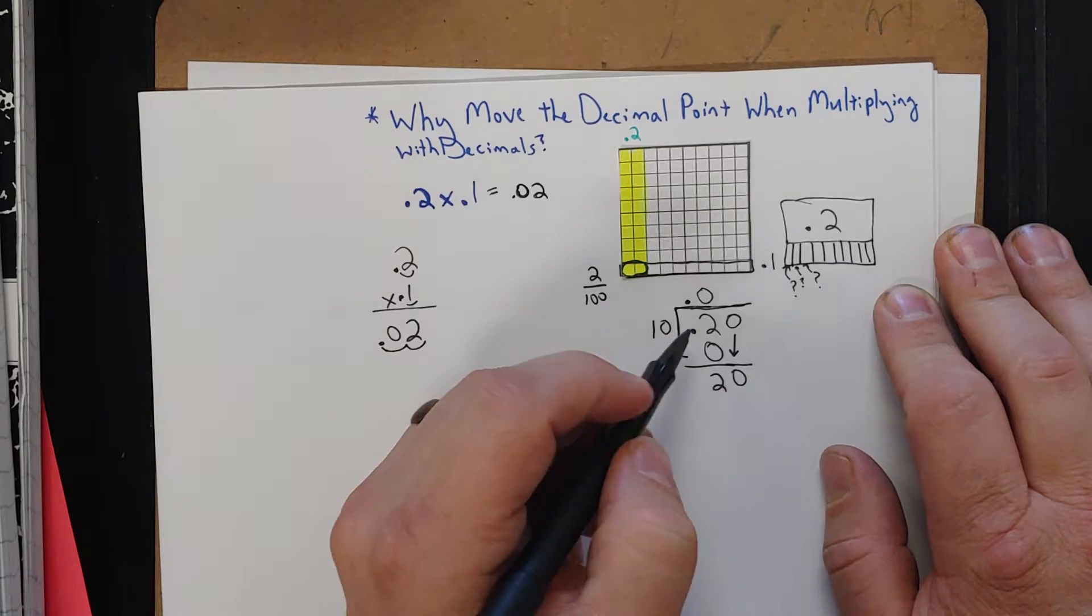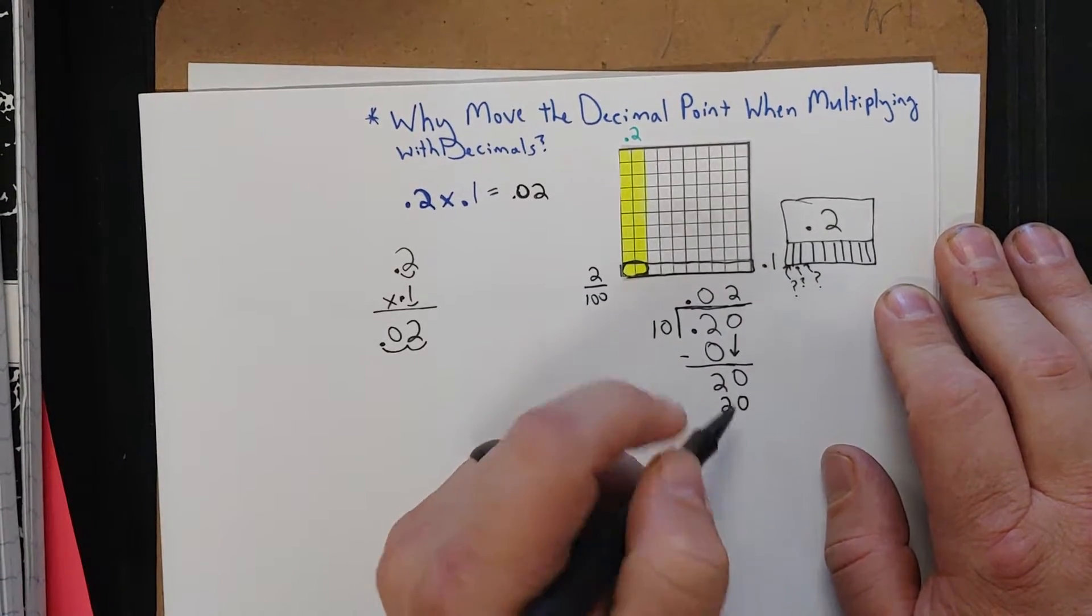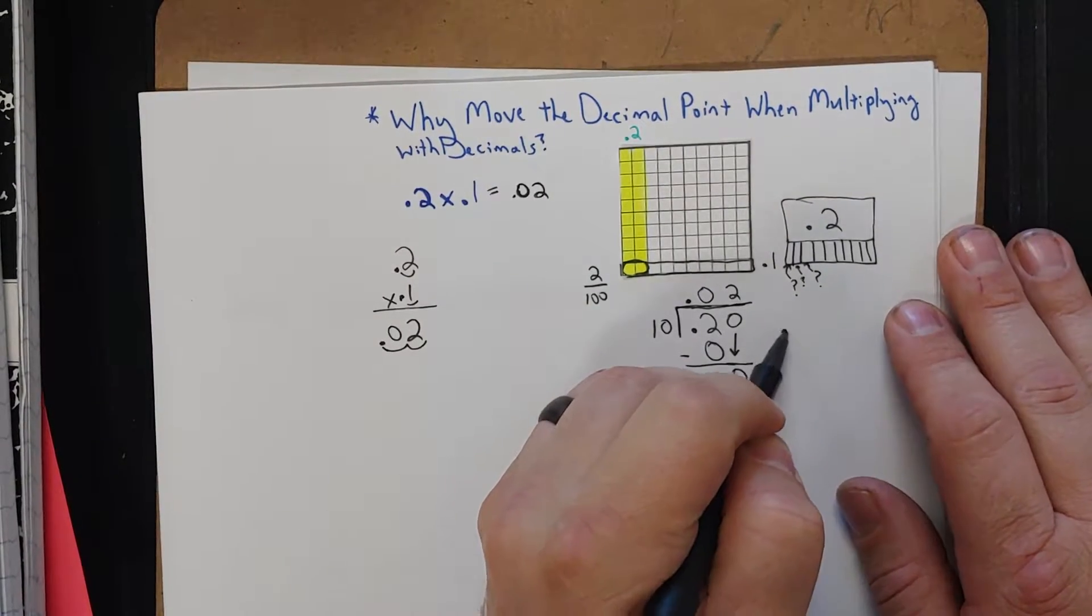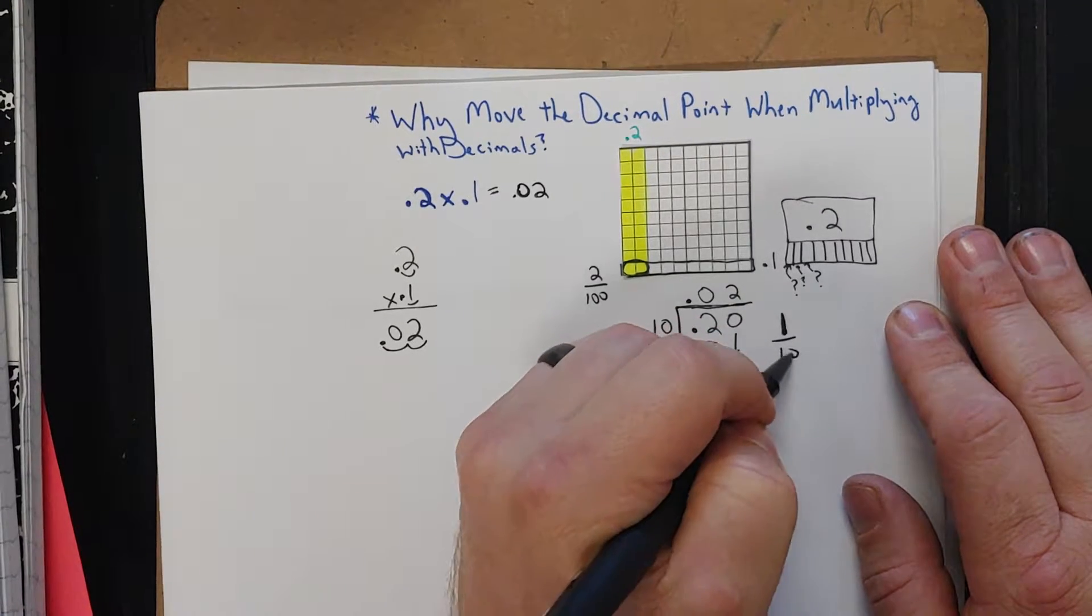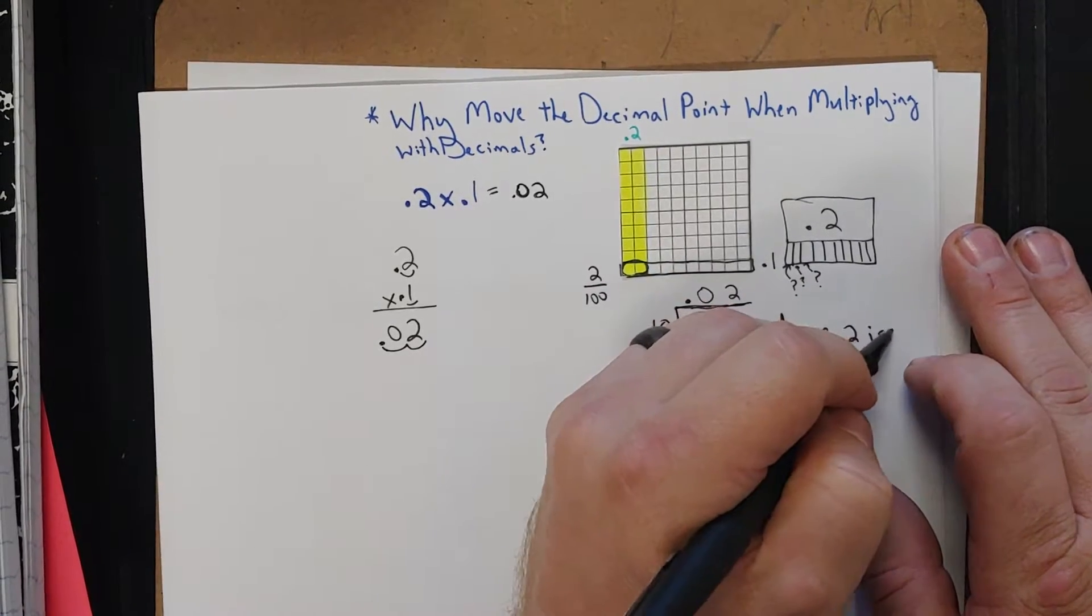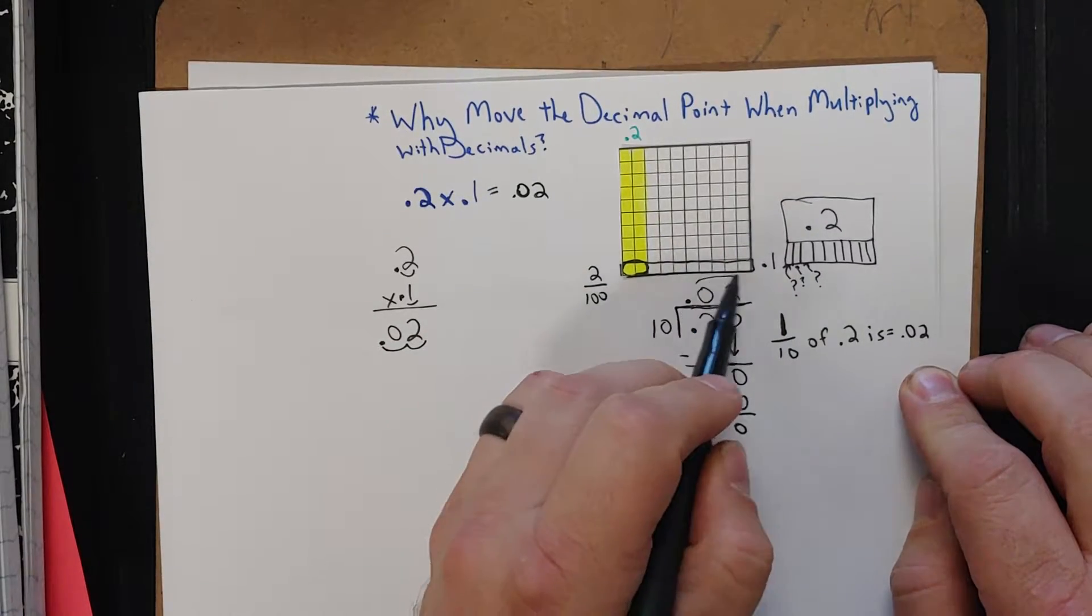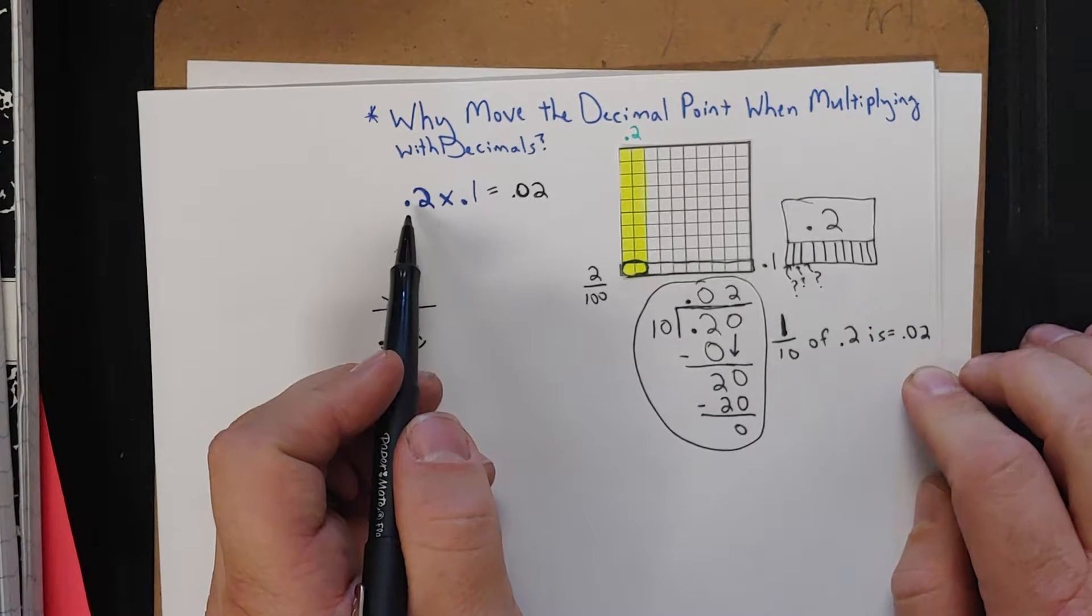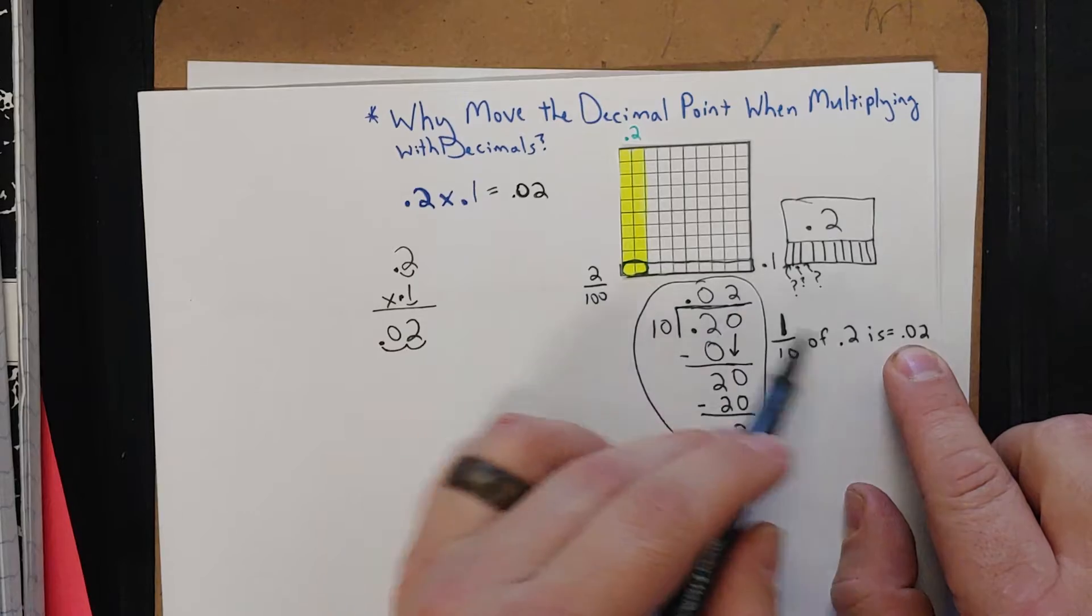So let's think about this. 10 times what can equal 20? Well, 10 times 2 is 20. Subtract 2 is 0. So what we showed is this: that 1 tenth of 2 tenths is 2 hundredths. That's what that proves. Remember when I said we're taking 1 tenth groups of 2 tenths? 1 tenth group of 2 tenths is 2 hundredths.